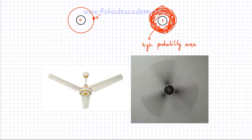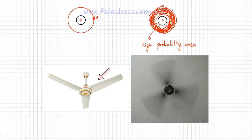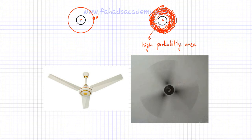To better understand this, here's an analogy involving a fan. Here's a stationary fan — I can tell exactly where the blades are. This is the same as the old idea of electrons being stationary at one point. Now imagine the fan starts rotating and spinning. If you've never seen a stationary fan and all your life you've seen a spinning fan, you can't really tell where the blades exactly are.